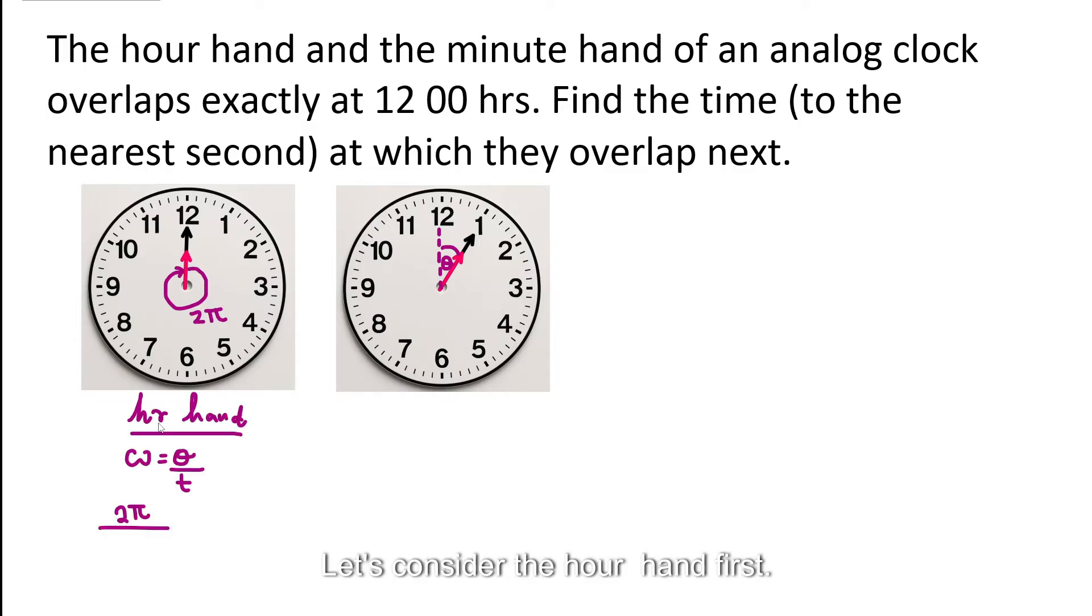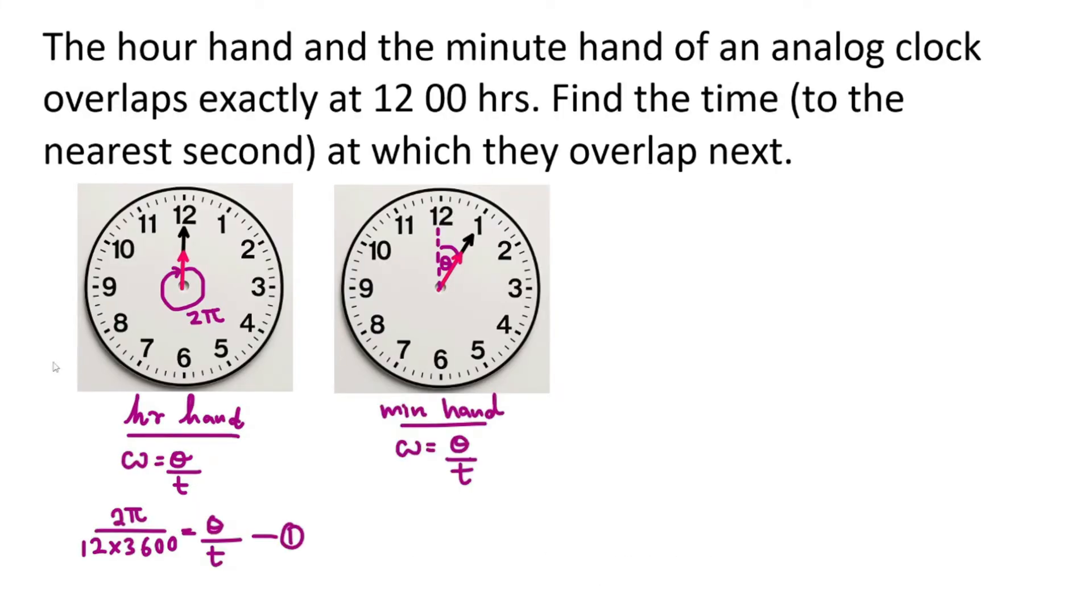Let's consider the hour hand first. For the hour hand, we are going to write omega equals theta over t and it completes a whole cycle. It's starting from the beginning, it completes the whole cycle, the two pi radians in 12 hours. Because in one hour, it will go here, two hours, three hours, four hours, like that, all the way to the starting point in 12 hours. So the time is, in seconds, 12 times 3,600. That's the number of seconds in an hour. So that is omega for the hour hand. Theta. We need to consider the angle here, right? Let's call it theta for the time being, and let's say the time at which it happens is t. Right? Let's call this one.